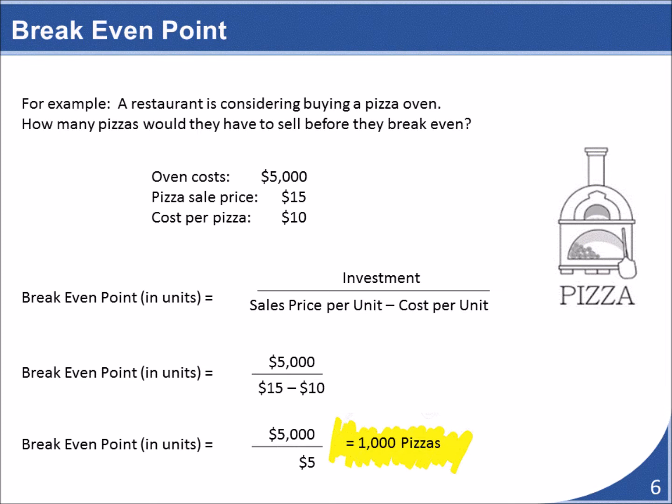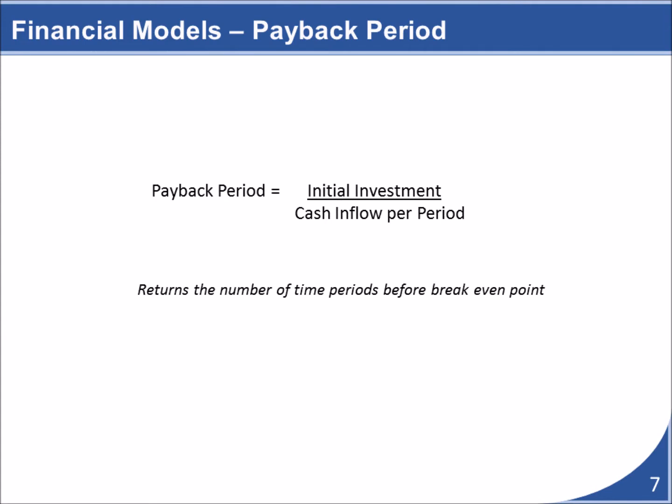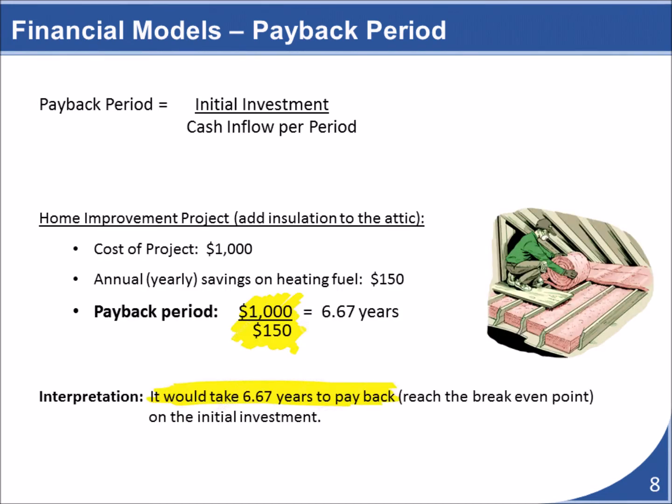The idea is fairly simple, but you can see how it could be used in developing a cost-benefit analysis business case. Now let's look at a similar formula used to determine how long it will take to hit the break-even point, as opposed to how many units need to be sold. This formula is called the payback period — it equals the initial investment divided by the cash flow over a period of time. Let's assume you are considering insulating your attic as a project, and you want to know if it's worth it. It would cost about $1,000 to purchase all the materials needed.